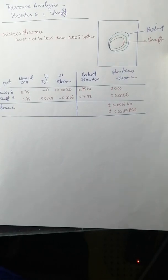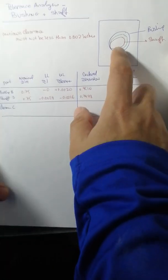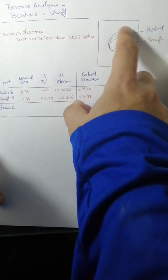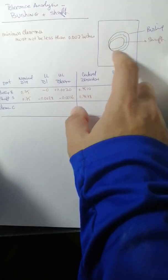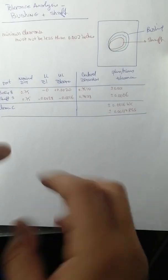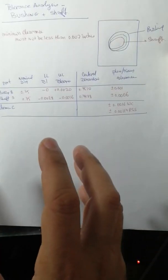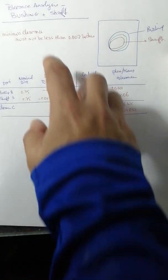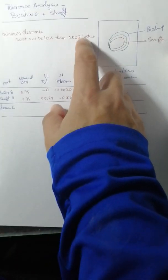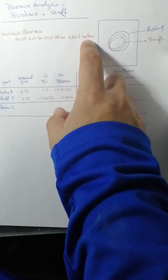In order to find the tolerance analysis between a shaft that should be inserted in a bushing, you can see here there is a shaft in red and the bushing in blue. There is a space which is the clearance between the two, and the clearance must not be less than 0.002 inches. There is no maximum to it.